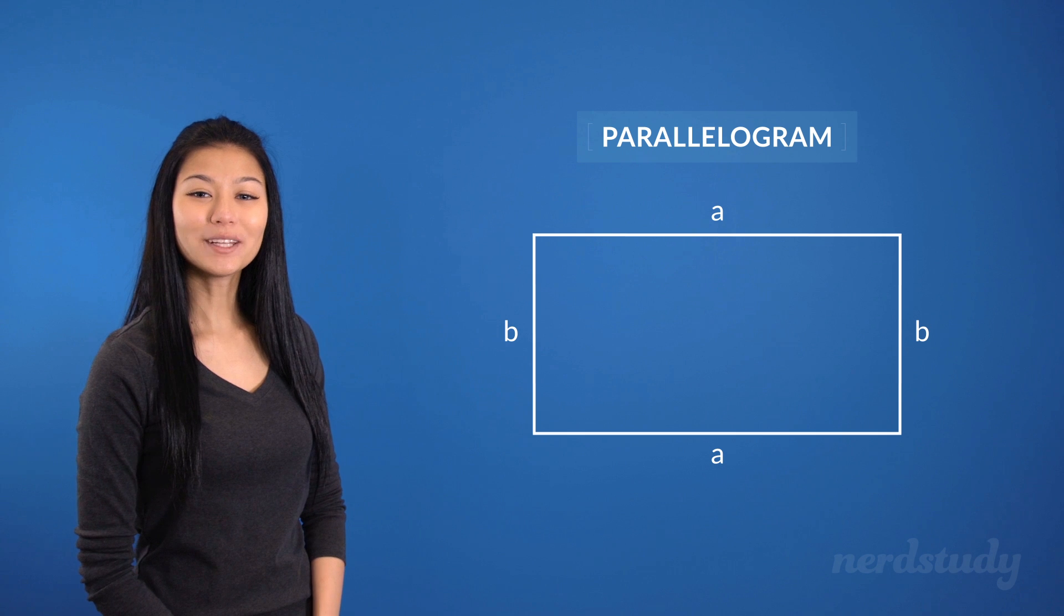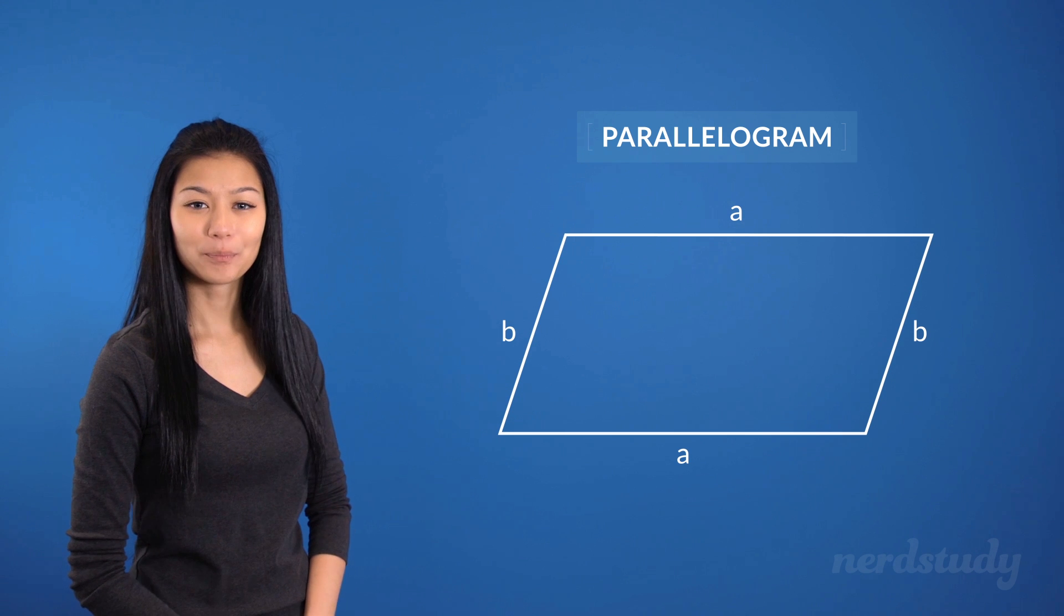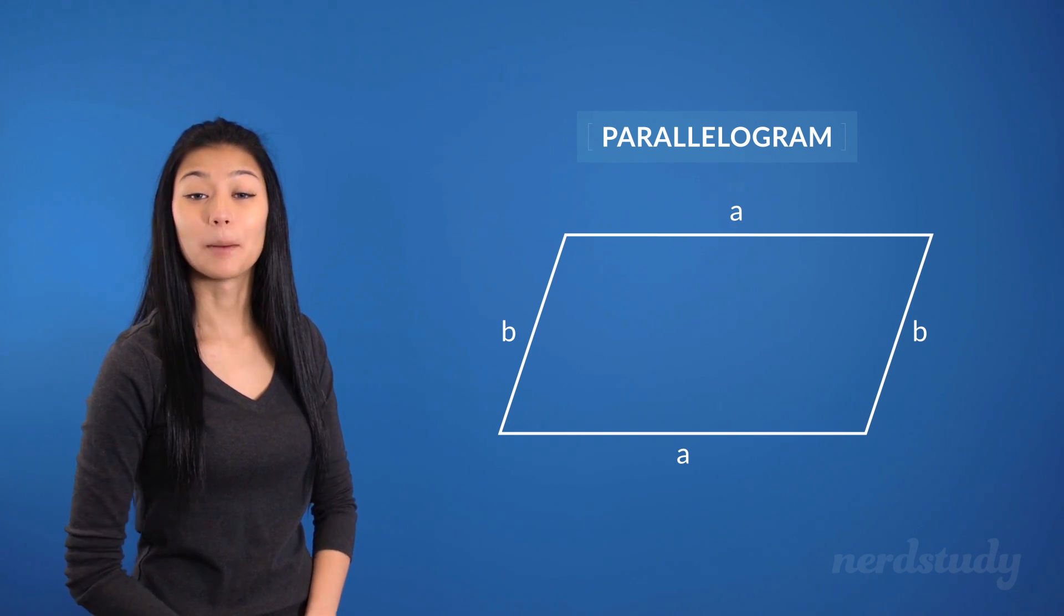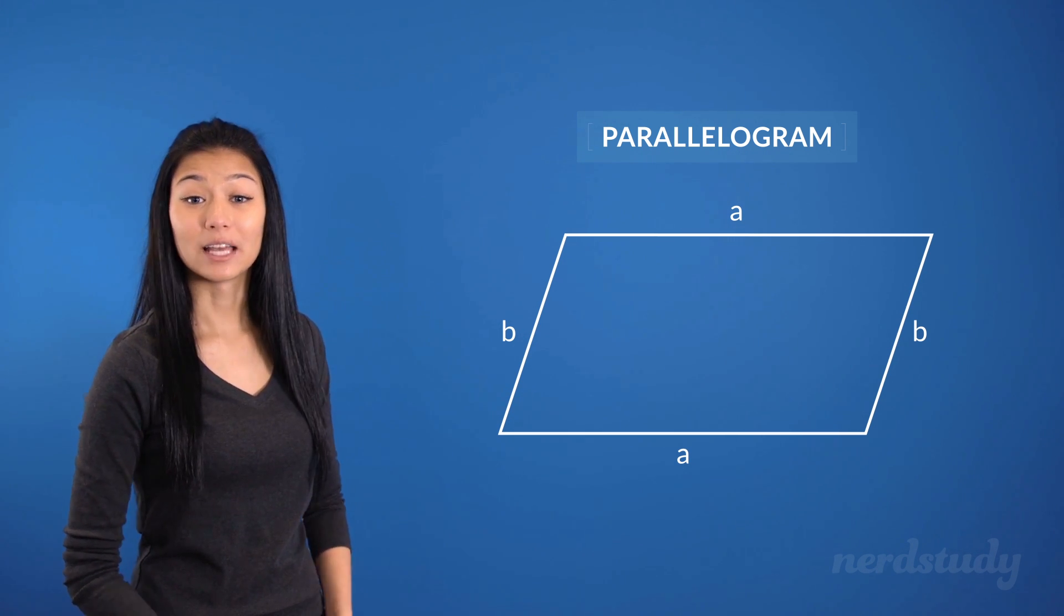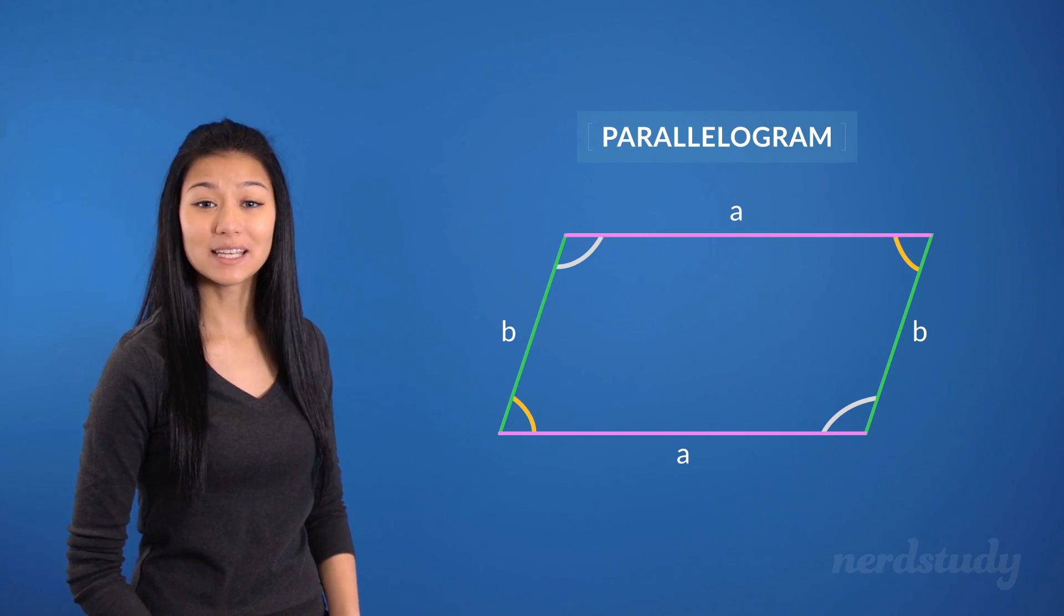Now, not only is a rectangle a parallelogram, but if these two sides were slanted, like so, this would still be considered a parallelogram, since, like we mentioned, its opposite sides are equal in length as well as opposite angles being equal.